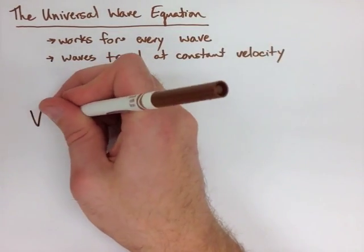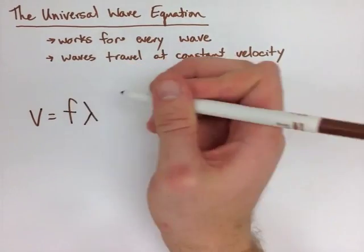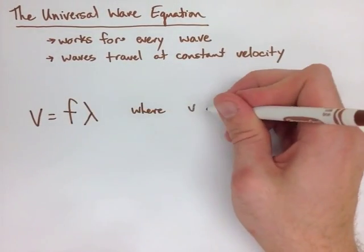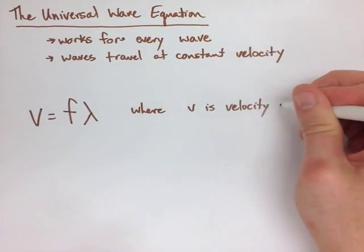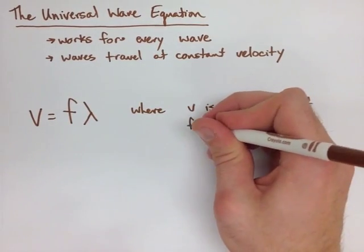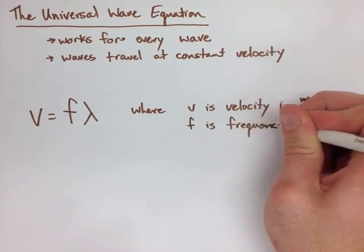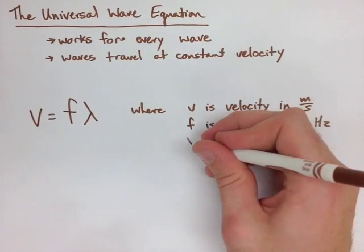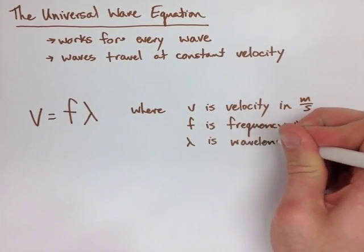The universal wave equation is V = fλ, where V is velocity measured in meters per second, f is frequency measured in hertz, and λ is wavelength measured in meters.